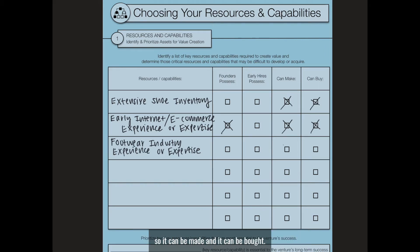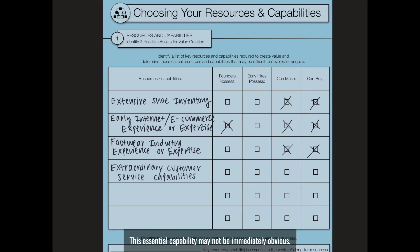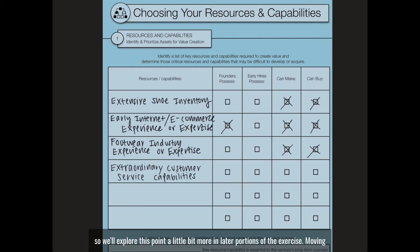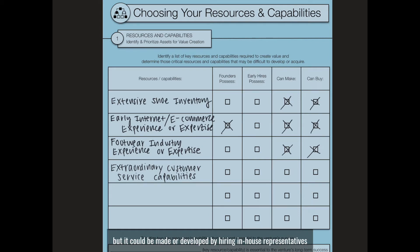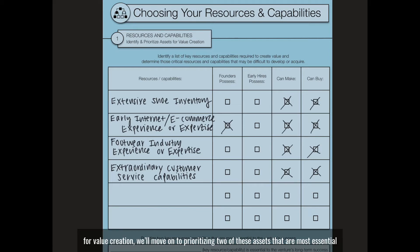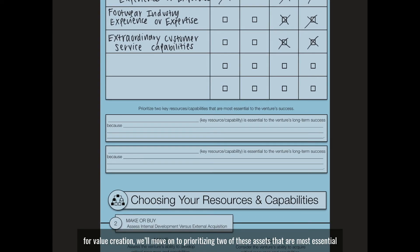One final key capability that Zappos.com would use to create value for customers was extraordinary customer service. This essential capability may not be immediately obvious, but it would be key to distinguishing Zappos from its e-commerce counterparts, so we'll explore this point more in later portions of the exercise. Swinburne did not possess this capability, but it could be made or developed by hiring in-house representatives or bought through customer service call outsourcing. Now that we've identified four key resources and capabilities required for value creation, we'll move on to prioritizing two of these assets that are most essential.